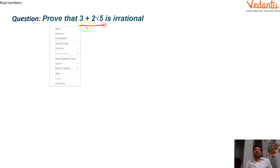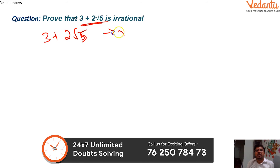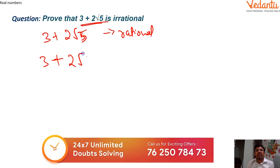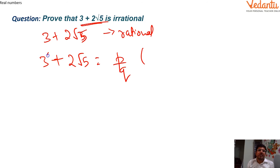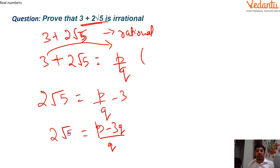Next type of question: prove that 3 + 2√5 is irrational. We use the same method. Assume 3 + 2√5 is rational, so we write 3 + 2√5 = p/q, where p and q are co-prime integers and q ≠ 0. Rearranging, 2√5 = p/q − 3. Taking LCM, 2√5 = (p − 3q)/q.